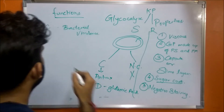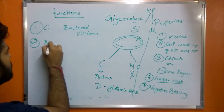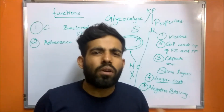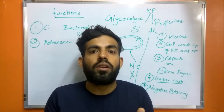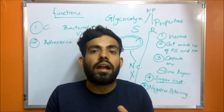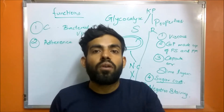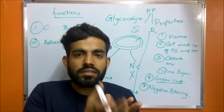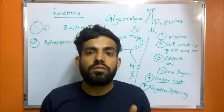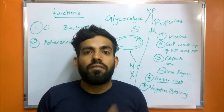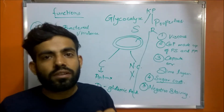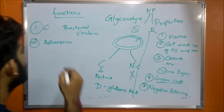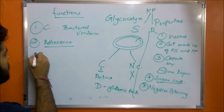The second function is adherence. For a bacterium to cause a disease, it is important for it to attach to a surface, multiply, colonize, and cause the disease. Glycocalyx allows the bacteria to adhere to surfaces. For example, Streptococcus mutans attaches to the tooth surface via glycocalyx, which allows the bacteria to attach and cause dental caries.